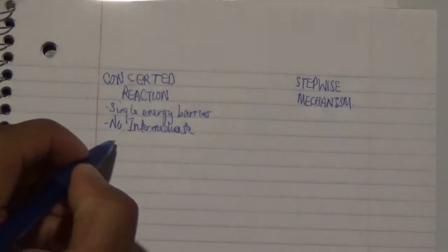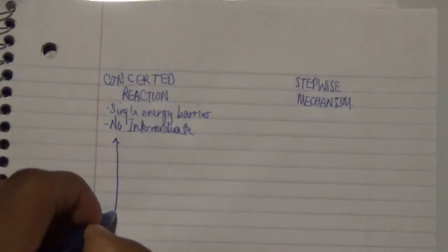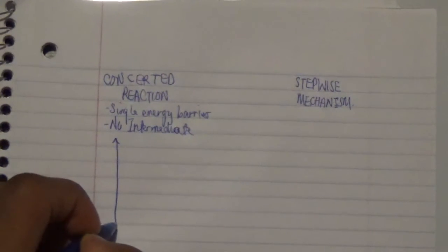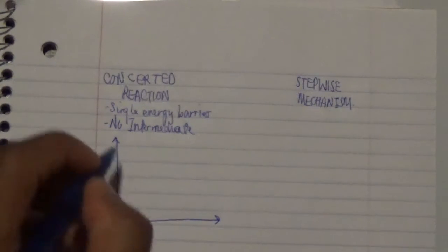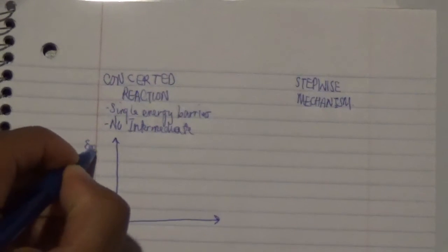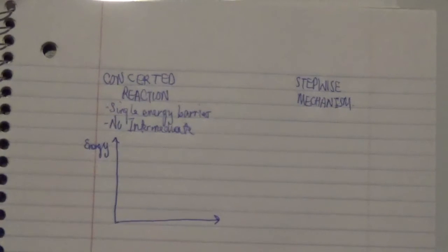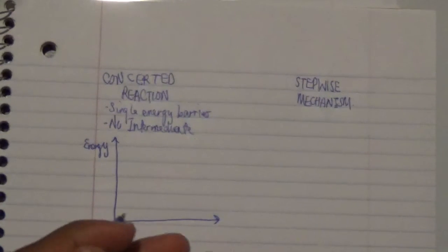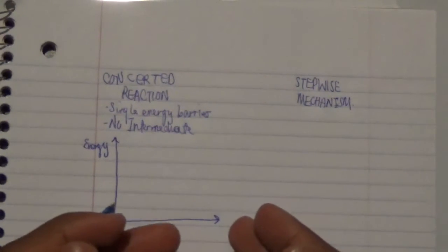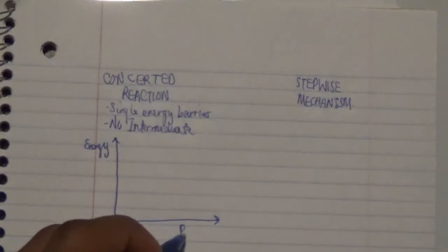In a concerted reaction, you have your reactant going into the transition state and then ending at the final product, either in an exothermic or endothermic reaction. For the purpose of this topic, we'll treat this as an exothermic process. Here is the energy level on the y-axis and the progress of the reaction on the x-axis.